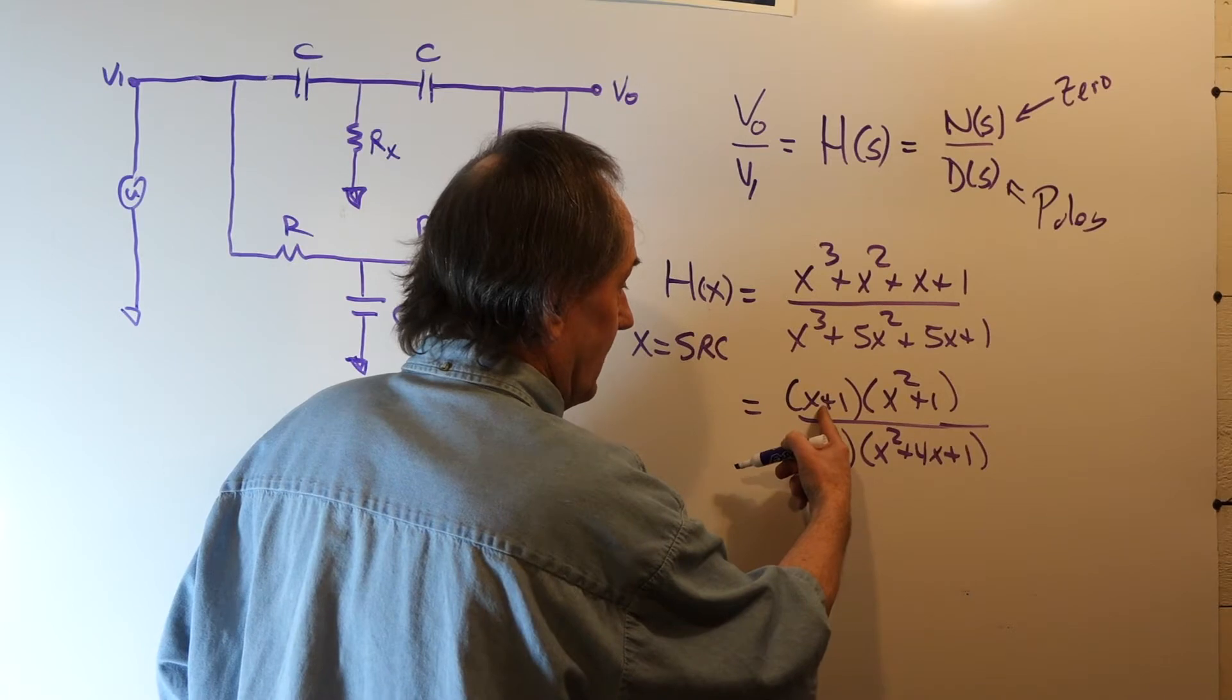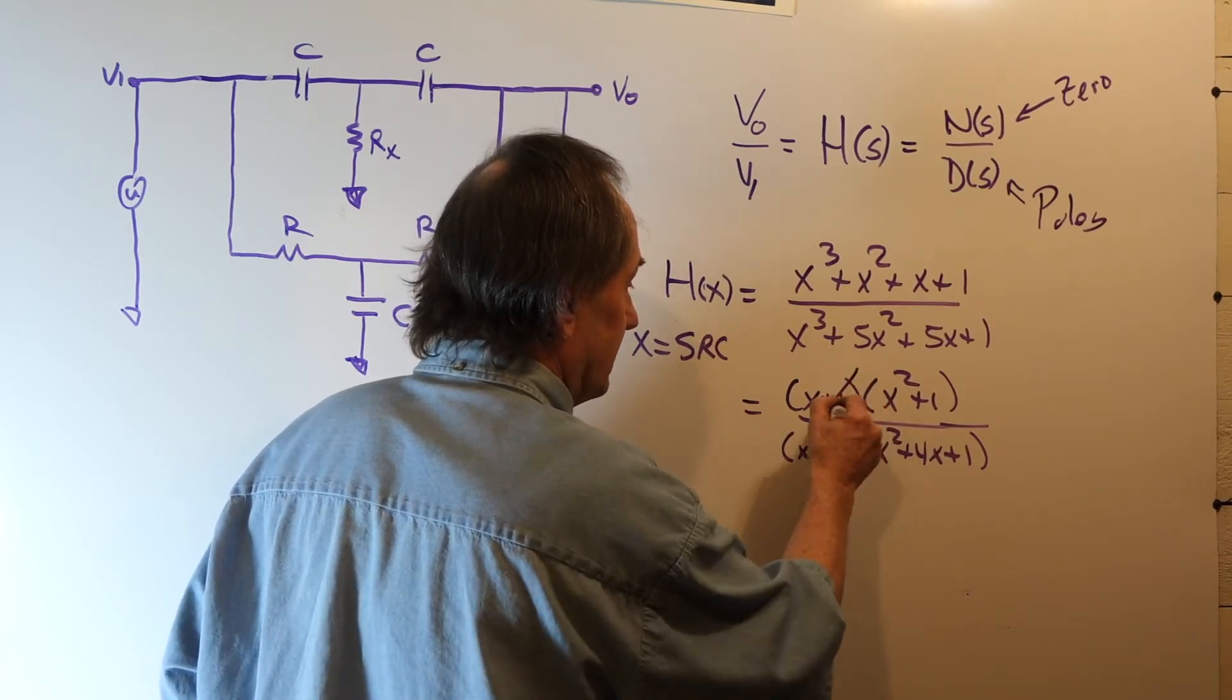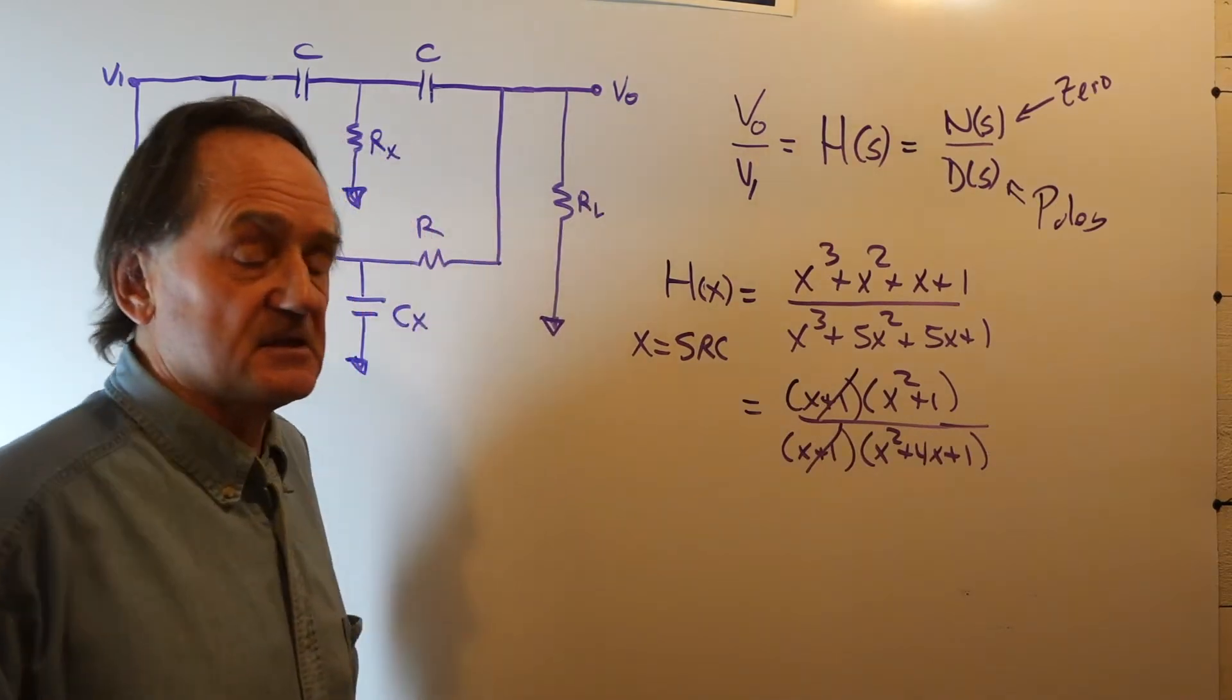We have a zero at X equals minus 1. We have a pole at X equals minus 1. They cancel and it behaves as a second order network.